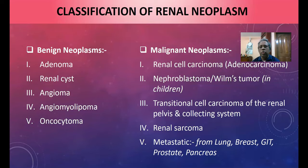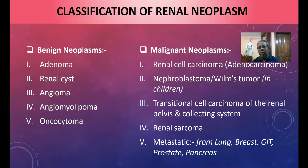Malignant lesions include: nephroblastoma or Wilms' tumor in children; transitional carcinoma of the renal pelvis and collecting systems; renal sarcoma; and metastatic lesions from lung, breast, GI tract, prostate, and others. These are the malignant lesions of the kidney.